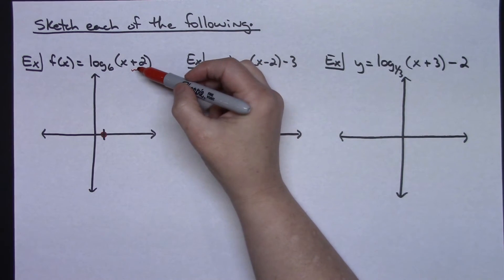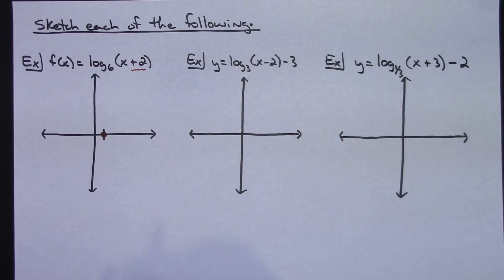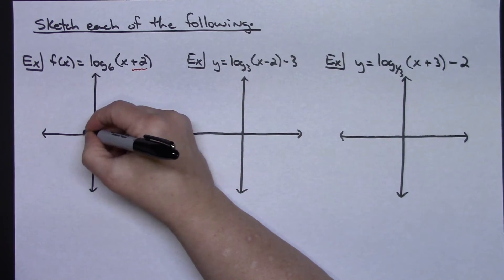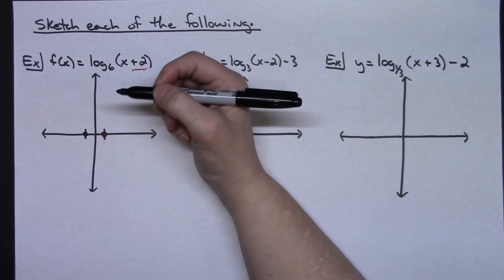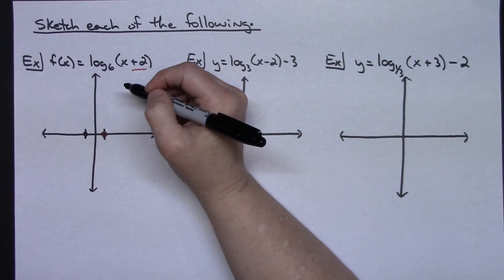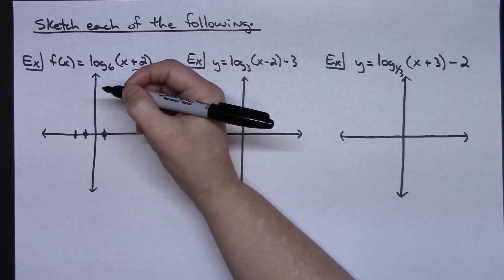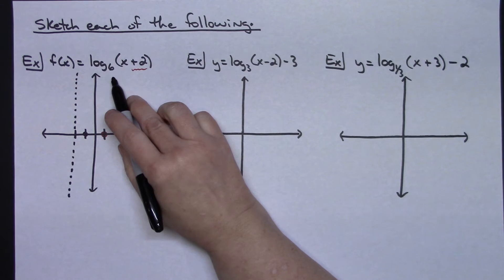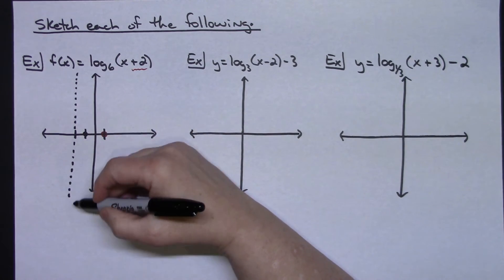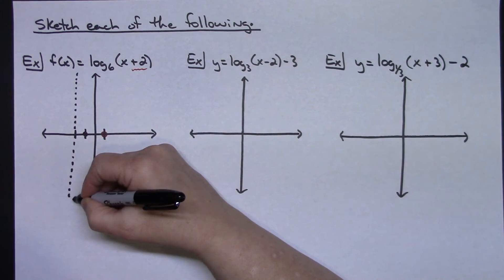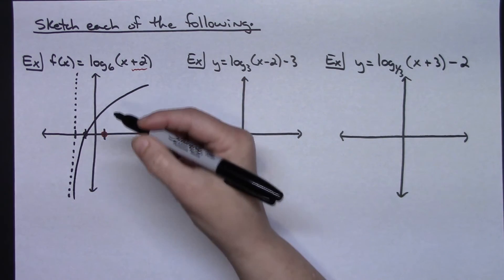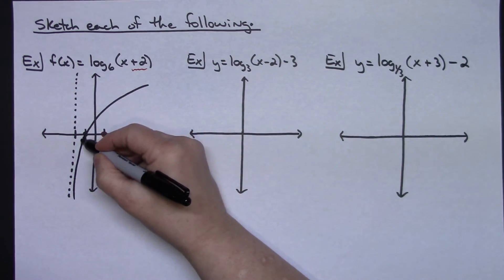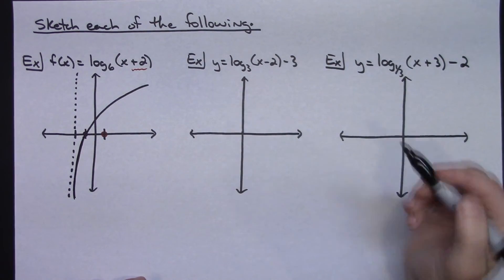For example one, this value is on the inside of the function, so I shift opposite left or right. I see a positive 2, which tells me I'm going to shift left 2. That moves my guide point from (1, 0) to (−1, 0). The vertical asymptote also shifts left 2 to x = −2. The base is greater than 1, so the graph hugs the vertical asymptote at the bottom and goes up and to the right through that point.